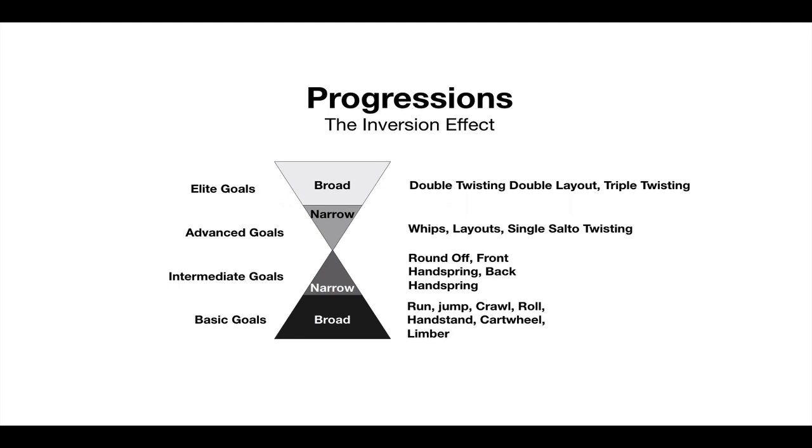In the advanced goals, it starts to widen, but it doesn't widen very wide. It's whips, layouts, single salto, twisting - basically the things you need.